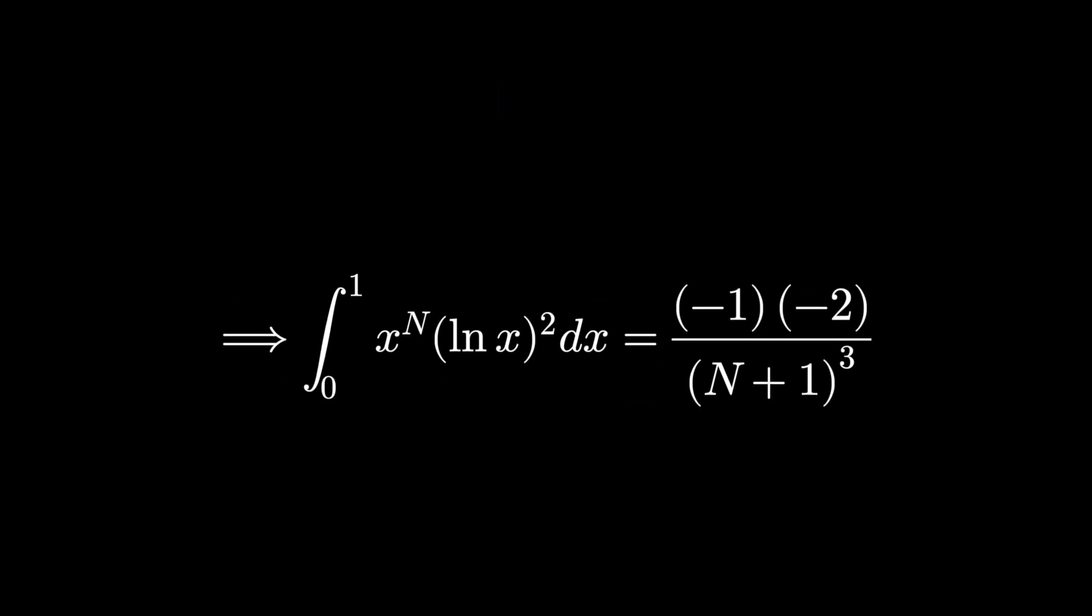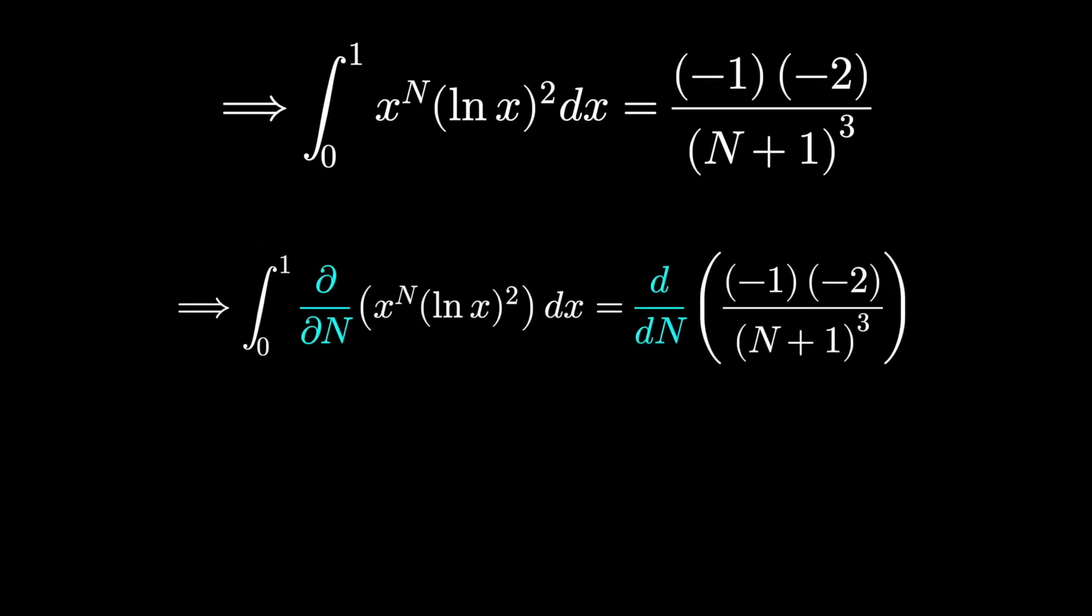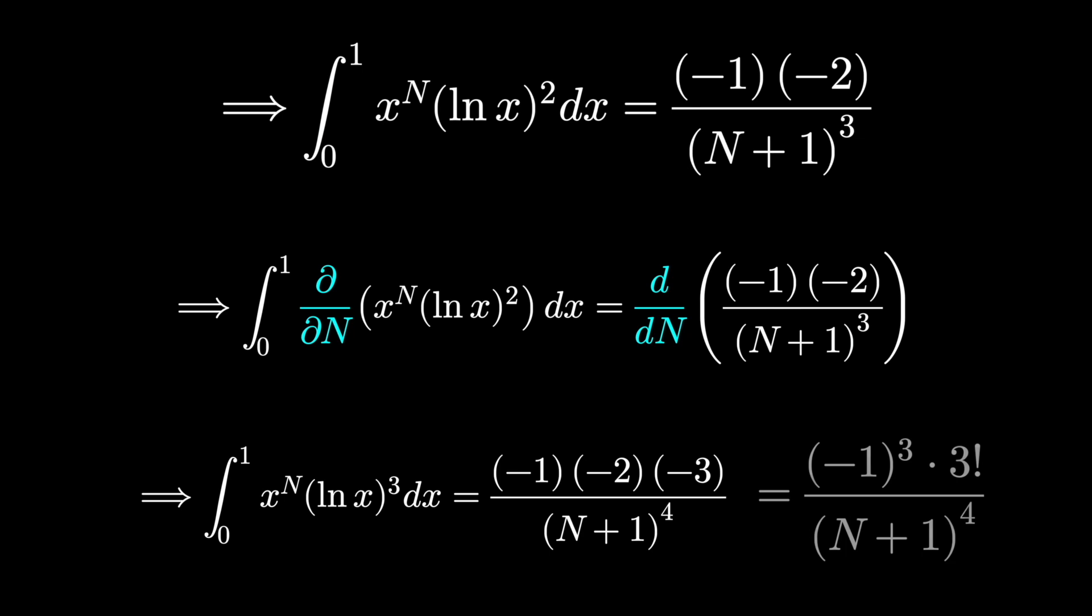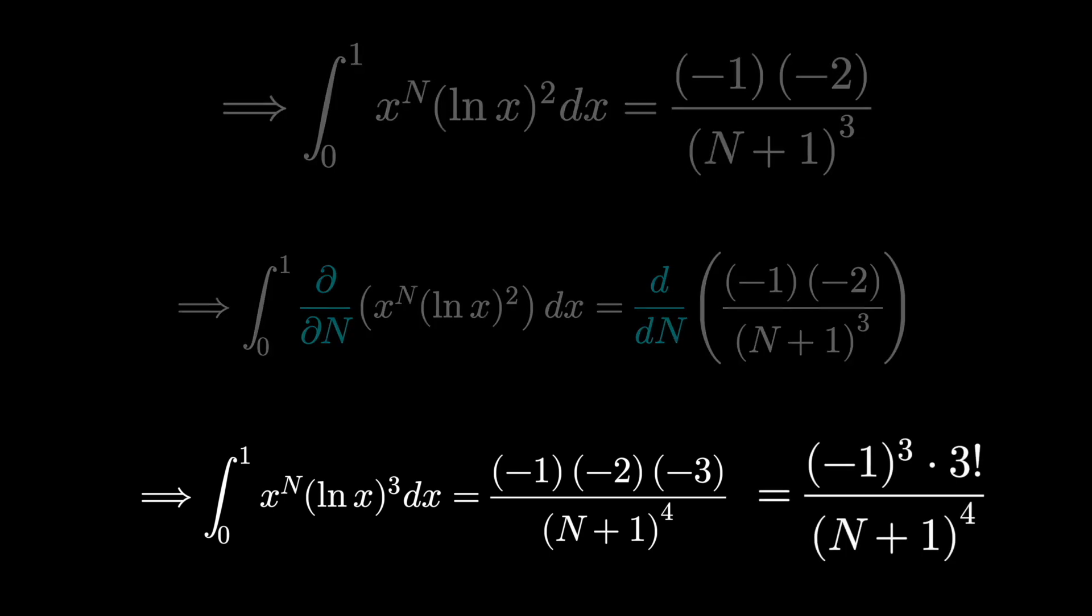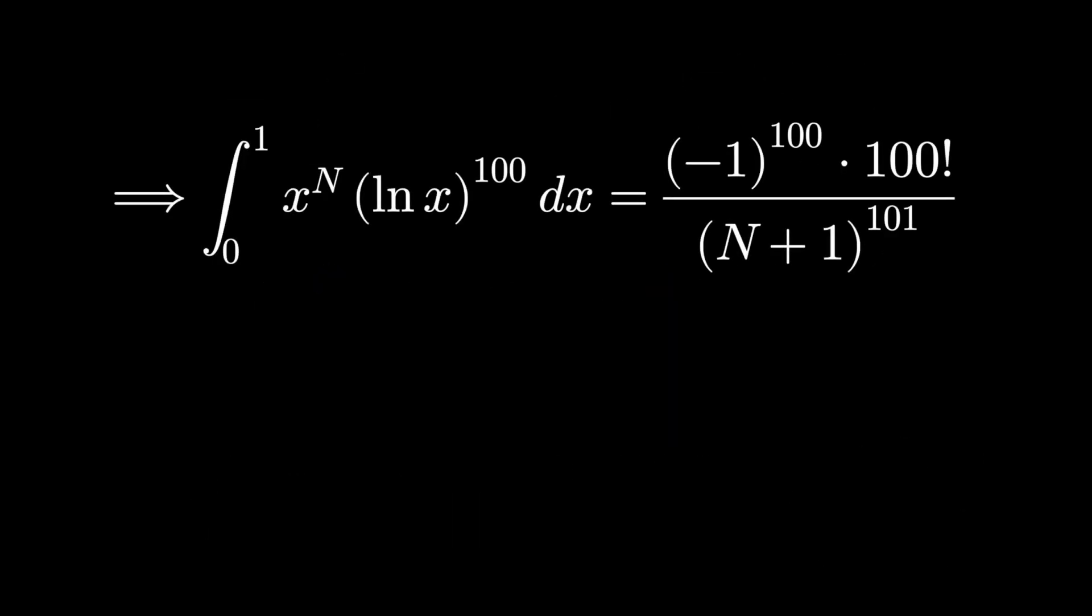It's a little harder to see if you actually differentiate n times and multiply everything together. So this is what it would look like after differentiating 100 times. Or if you differentiate k times, you can really see the distinction between the powers of x and the powers of the natural logarithm.